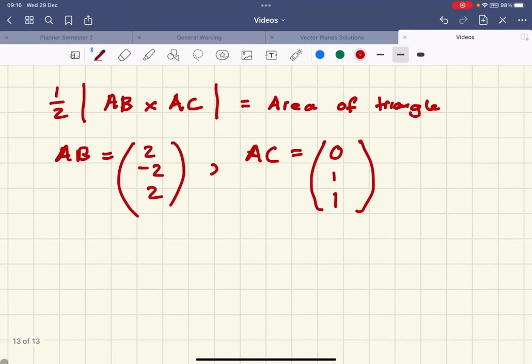Now we're going to do AB cross AC. So this means I'm going to do minus 2 times 1, minus 2, take away 2, equals minus 4.